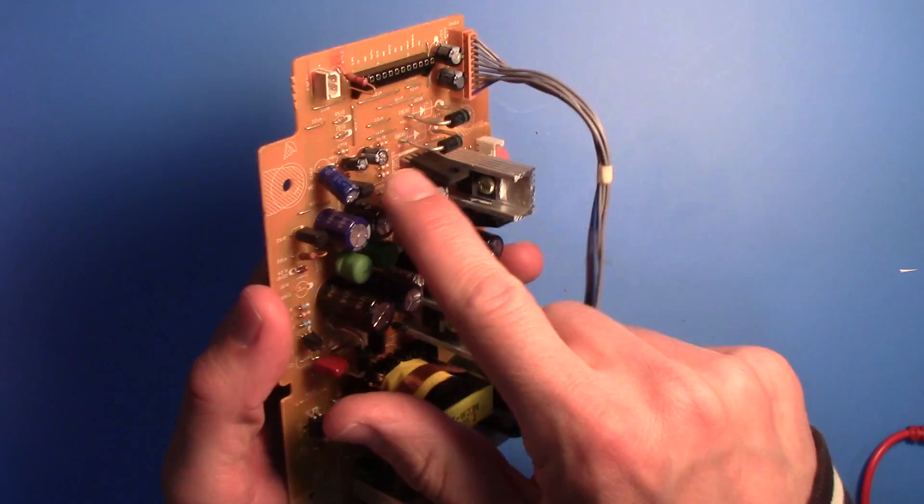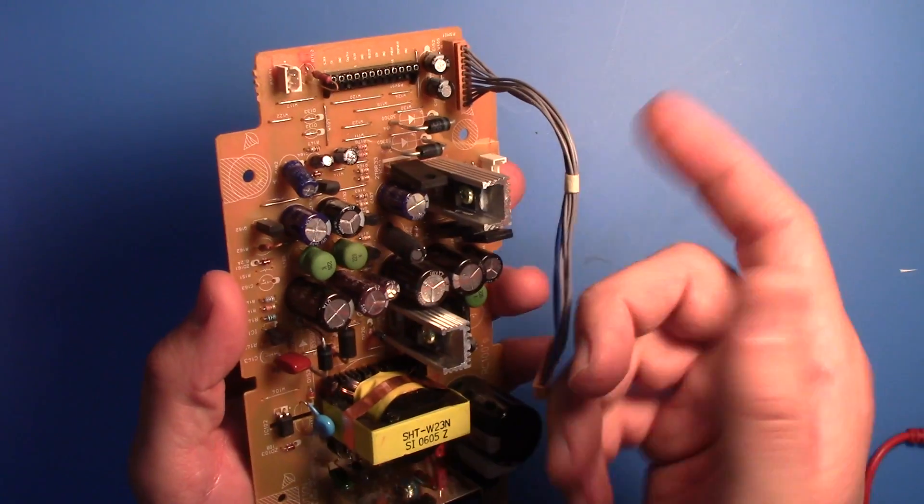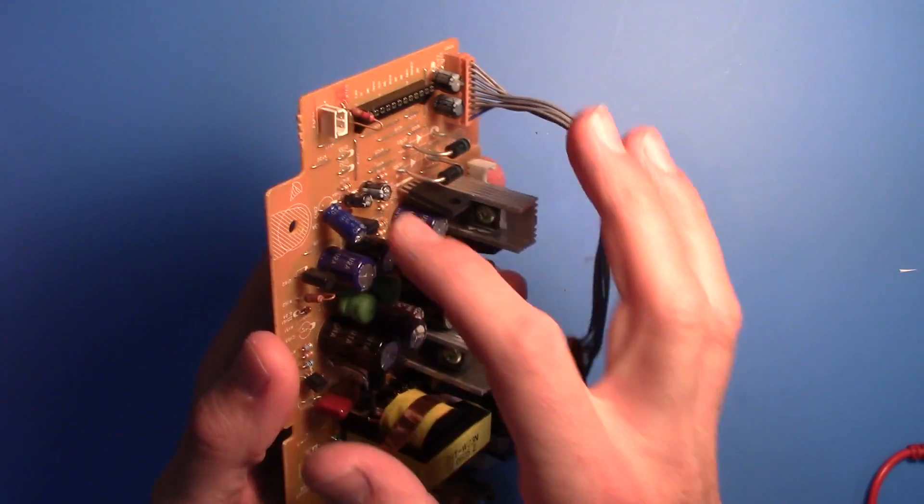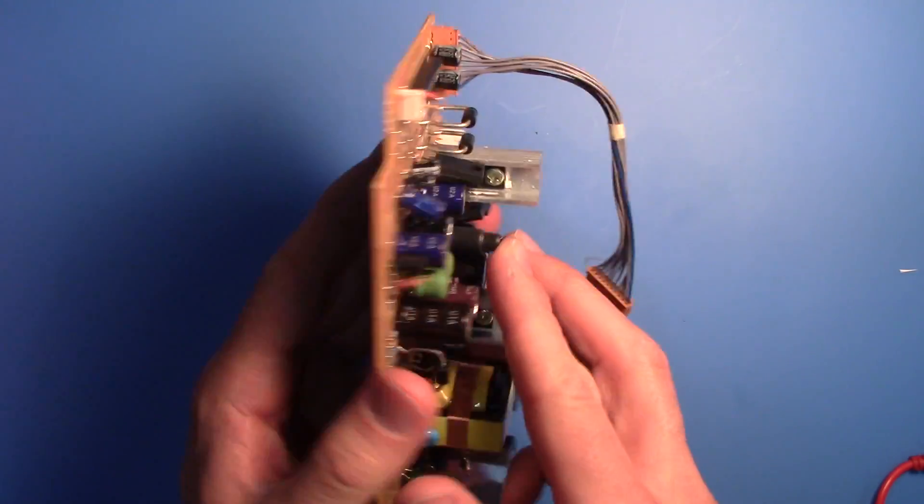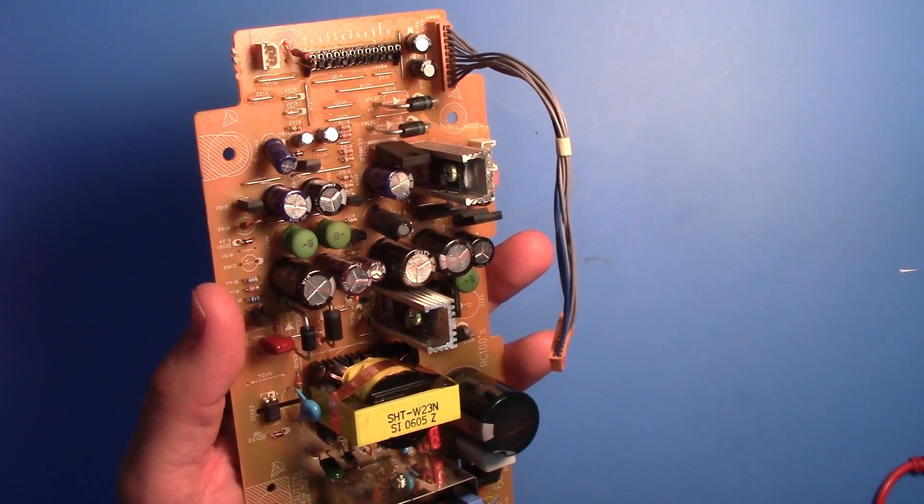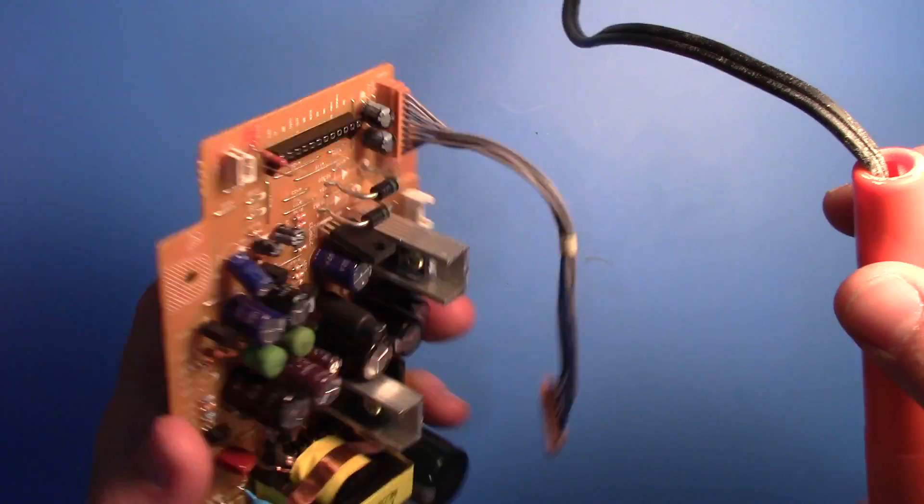It's important to remember which way it was facing when you pull it off your board, so that if you put on a new one you know which way to install it. They have to be tested outside of the circuit, so you have to remove it.